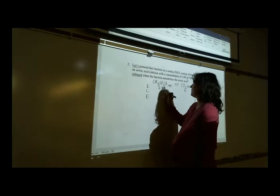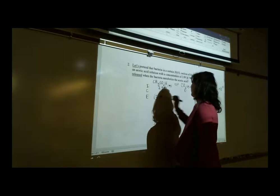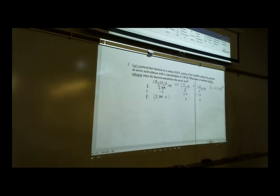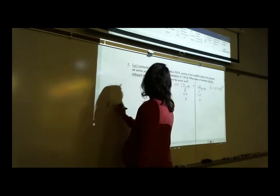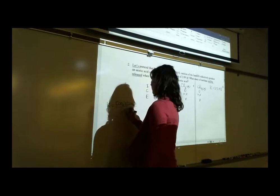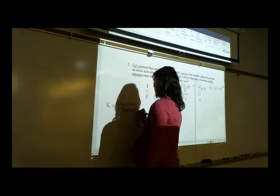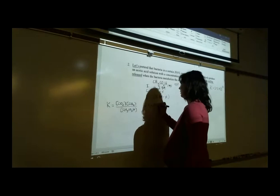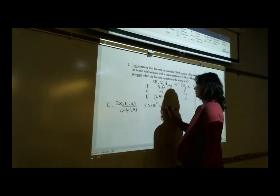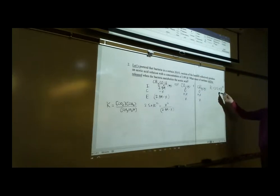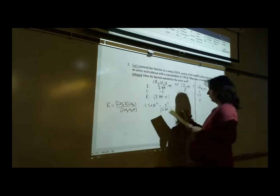Acetic acid goes down by x (giving 2.89 − x), and each product goes up by x. The equilibrium expression is K = [CO₂][CH₄] / [CH₃CO₂H]. So: 2.5 × 10¹³ = x² / (2.89 − x). We cannot use the 5% approximation since K >> 1. Rearranging: 7.23 × 10¹³ − 2.5 × 10¹³·x = x², which gives x² + 2.5 × 10¹³·x − 7.23 × 10¹³ = 0.